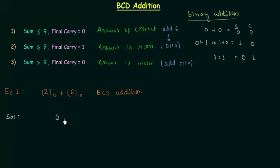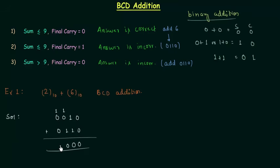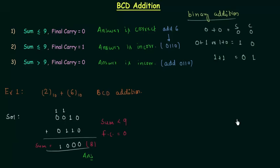2 is represented by 0010 and 6 is represented by 0110. We will add them using simple binary addition: 0 plus 0 is 0; 1 plus 1 is 0 with carry equal to 1; 1 plus 0 plus 1 is 0 with carry equal to 1; 1 plus 0 plus 0 is 1. So 1000 is the sum. We can clearly see sum is less than 9 because 1000 is 8, and 8 is less than 9. Final carry is equal to 0. From the first case we can say the answer is correct, so 1000 is the correct answer.